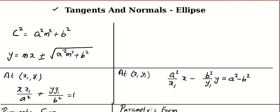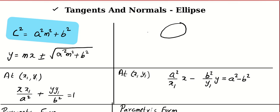Before we start you should be very good with the following things. The first is the condition for a tangent to an ellipse: if we want the tangent in the form y = mx + c, then c should be plus or minus the square root of a²m² + b². Because of the shape of the ellipse, there will be two tangents parallel to each other.